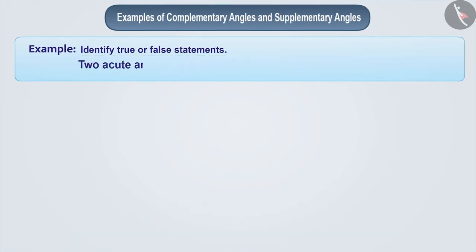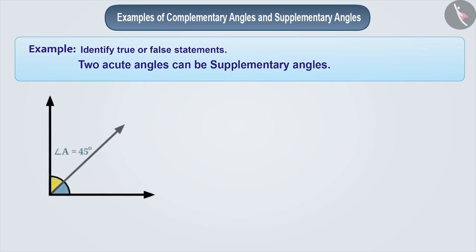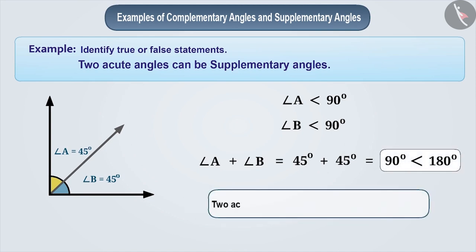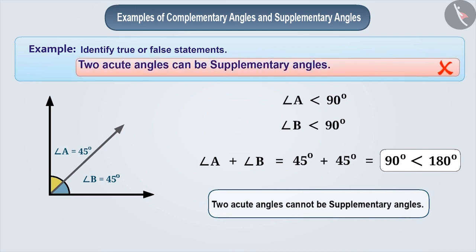Statement: Two acute angles can be supplementary angles. Let's find out whether this is true or false. Suppose angle A and angle B are acute angles. This means angle A is smaller than 90 degrees and angle B is also smaller than 90 degrees. If we add both angles, the sum of angle A and angle B will be less than 180 degrees. Therefore, two acute angles can never be supplementary angles, and the given statement is false.